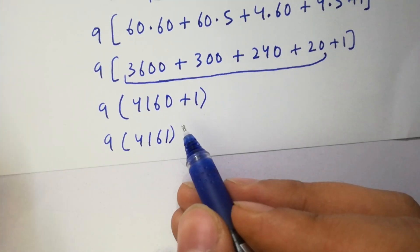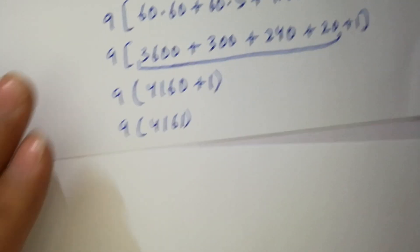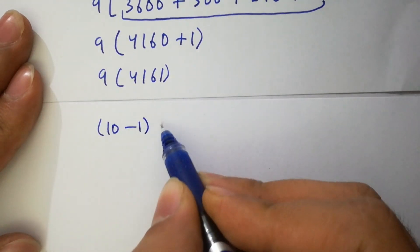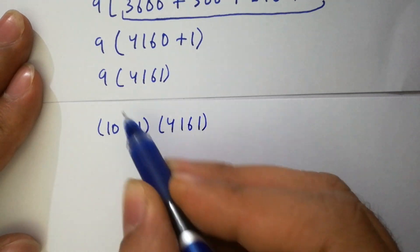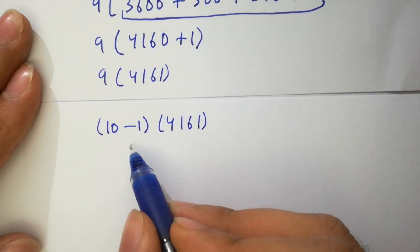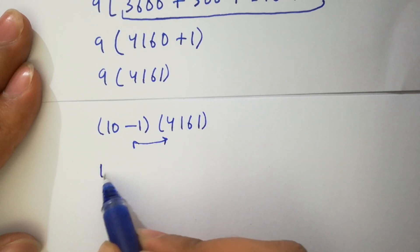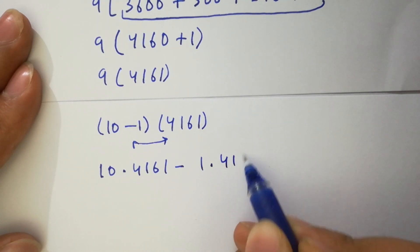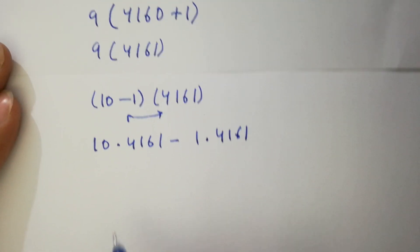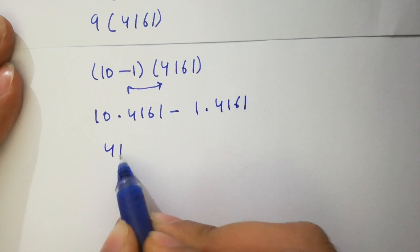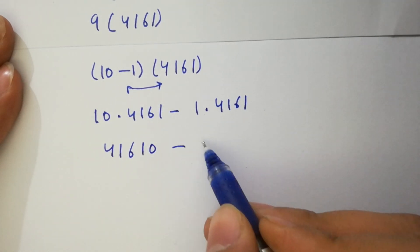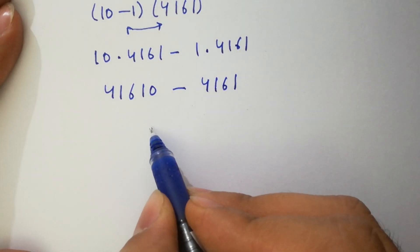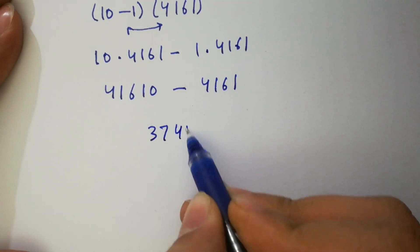In the next step, 9 is the same as 10 minus 1. So we have (10 minus 1) times 4161. We can multiply: 10 times 4161 equals 41610, minus 1 times 4161. Simplifying: 41610 minus 4161 is equal to 37449.